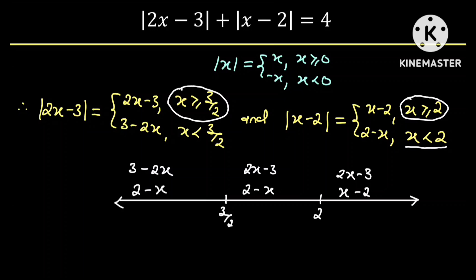From here we have to add these two expressions in each of the cases. In the first case we have 3 plus 2 which is 5, and negative 2x minus x which is negative 3x. In the second case we have 2x minus x which is x, and 2 minus 3 which is negative 1. And in the third case we have 2x plus x which is 3x, and negative 3 minus 2 which is negative 5.